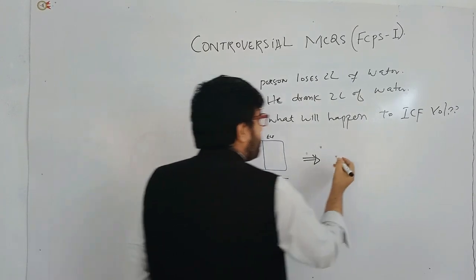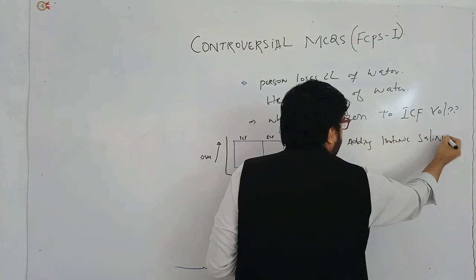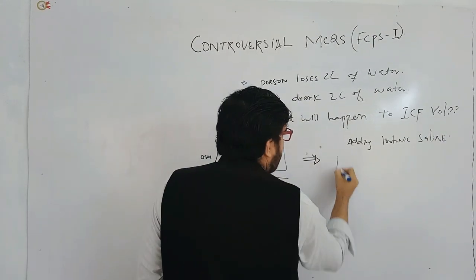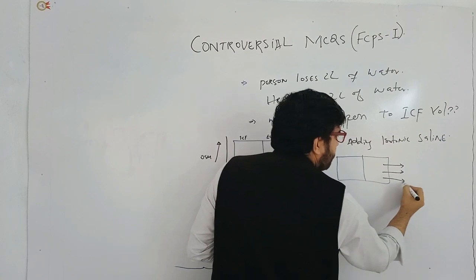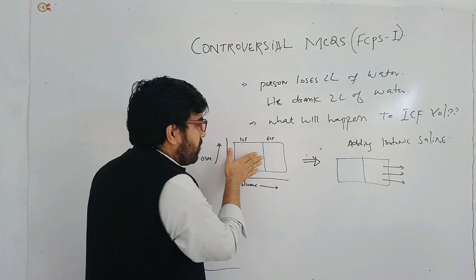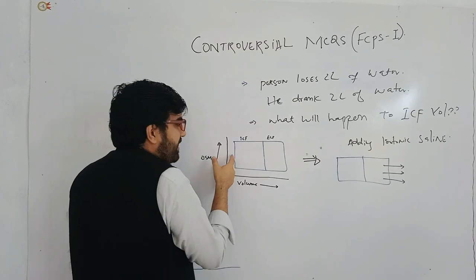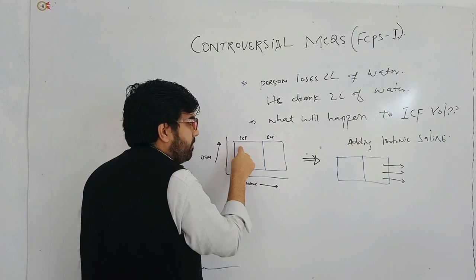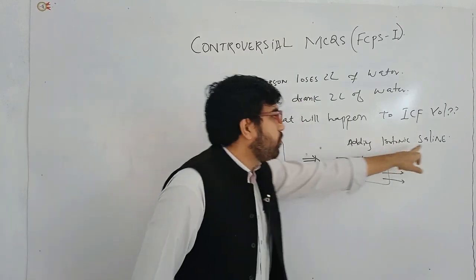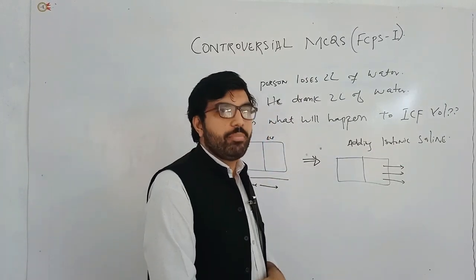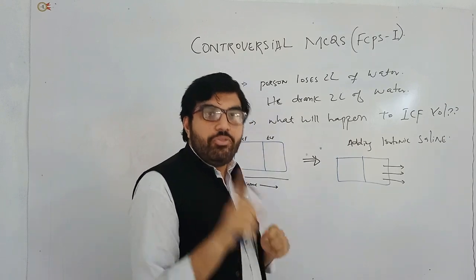If you add normal saline — isotonic saline — keeping that diagram in mind: intracellular fluid and extracellular fluid. Isotonic saline only stretches the extracellular side. It increases only the extracellular fluid volume; it does nothing to intracellular fluid volume. It also does nothing to the osmolality of intracellular or extracellular fluid, because isotonic saline has 0.9% osmolality, the same as plasma — so it only increases extracellular volume, not osmolality.